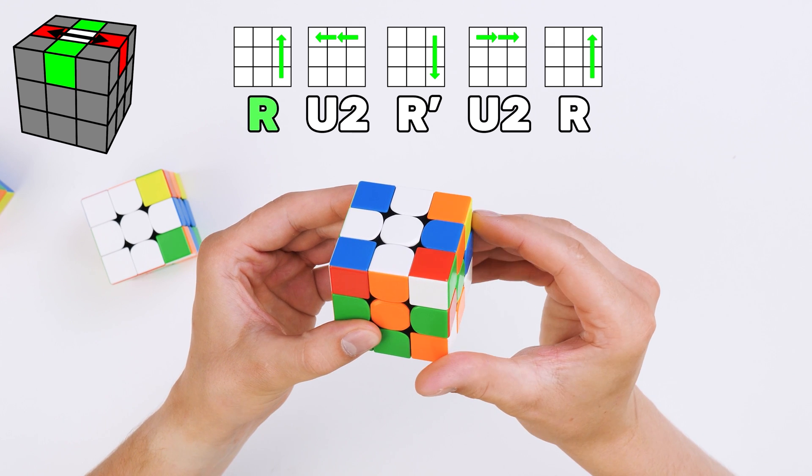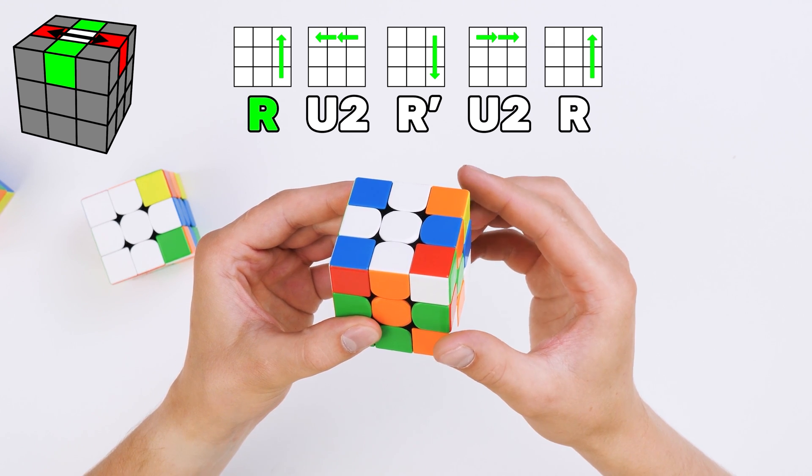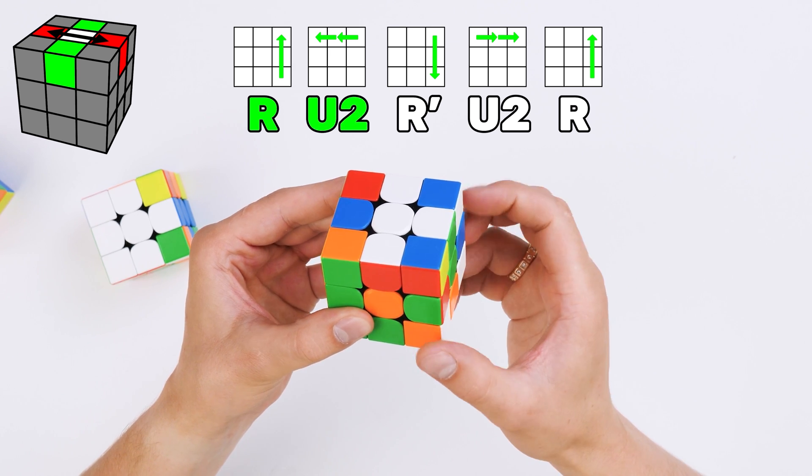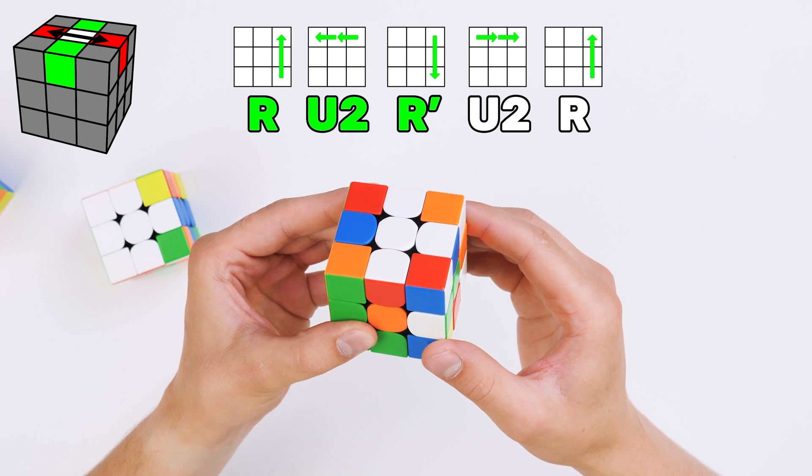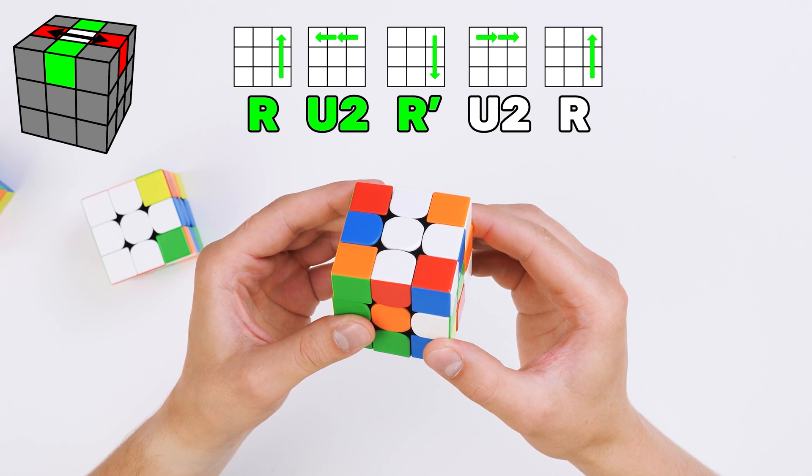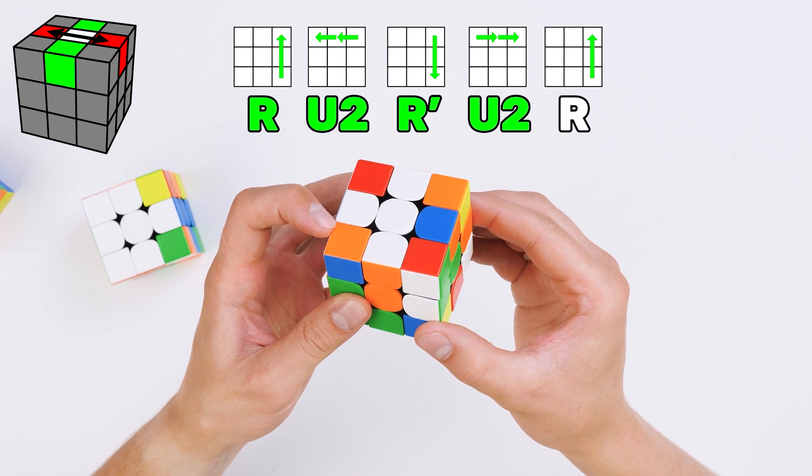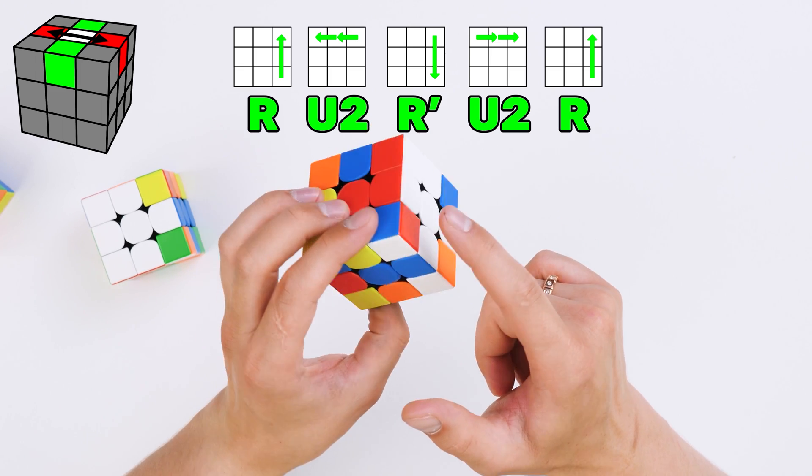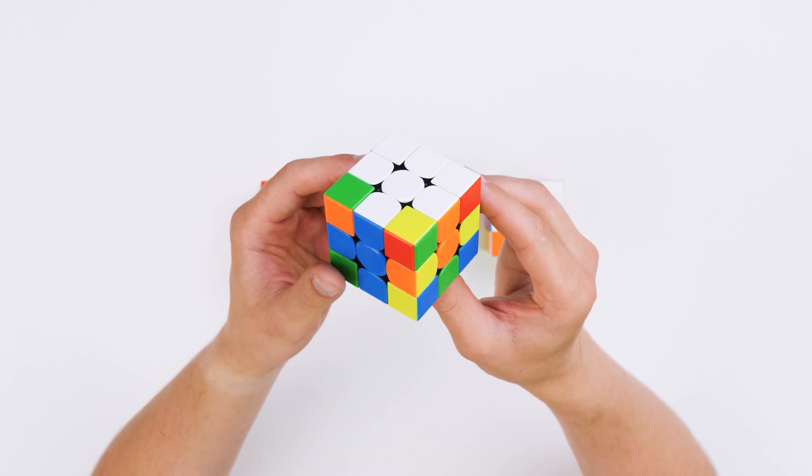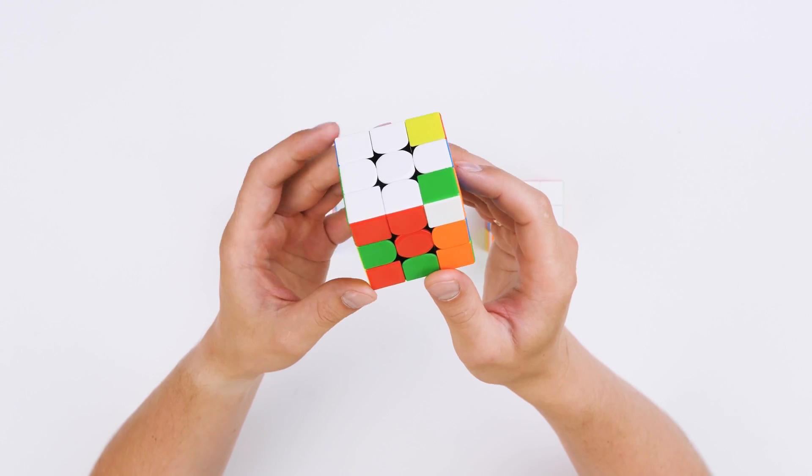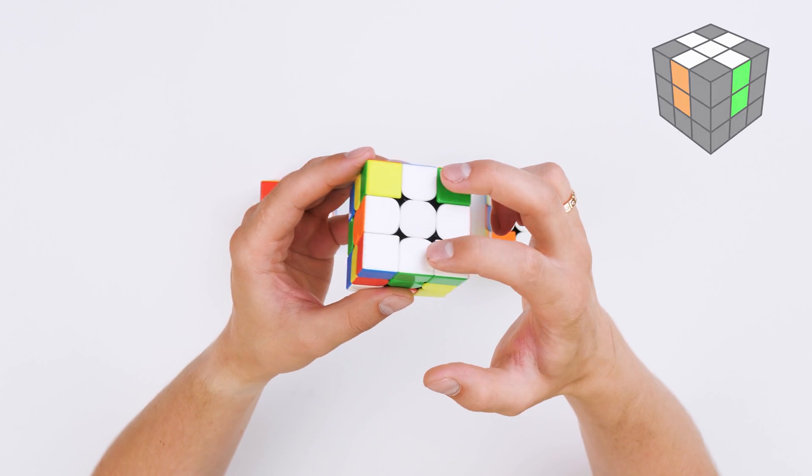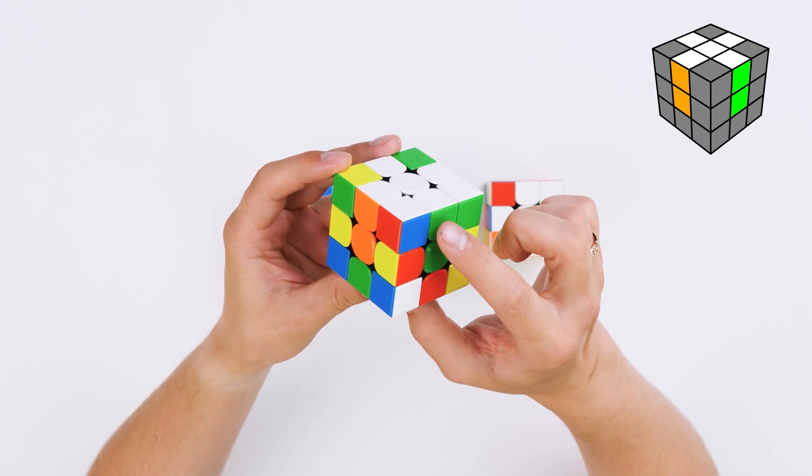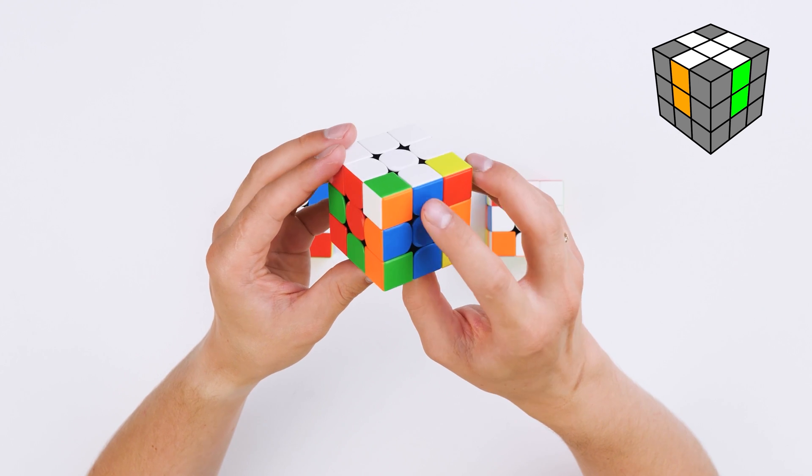We raise the right face, then turn the top side not once, but twice. Lower the right face backwards. Turn the top face again two times, but counterclockwise. And raise the right face. As you can see, the cross is sold. Take your cube in hand and make sure your cross is sold correctly. That is, all four edges stand wide up. And all of them are the same color as the neighboring centers.